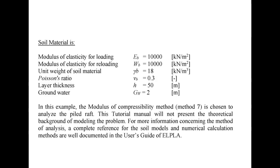For reloading it will be the same. Unit weight of soil will be 18 and Poisson's ratio will be 0.3. Layer thickness will be 50 meter and groundwater will be 2 meter from the ground surface. In this example, the modulus of compressibility method — method 7 — and ELBLA is chosen to analyze the pile-raft. This tutorial will not present the theoretical background; full references are documented in the ELBLA user's guide.